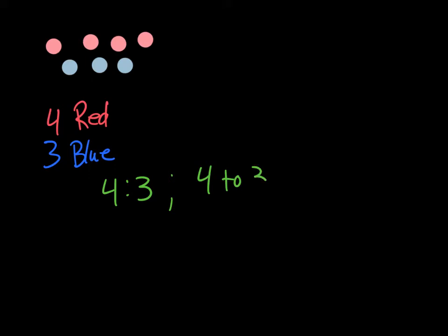But it can also be written as 4 to 3, or 4:3. But that's not the only way we can do it. We can also look at it and say that it is 3 to 4. We can say it is 3 to 7 because if we take our 4 and our 3, we have a 7 total.